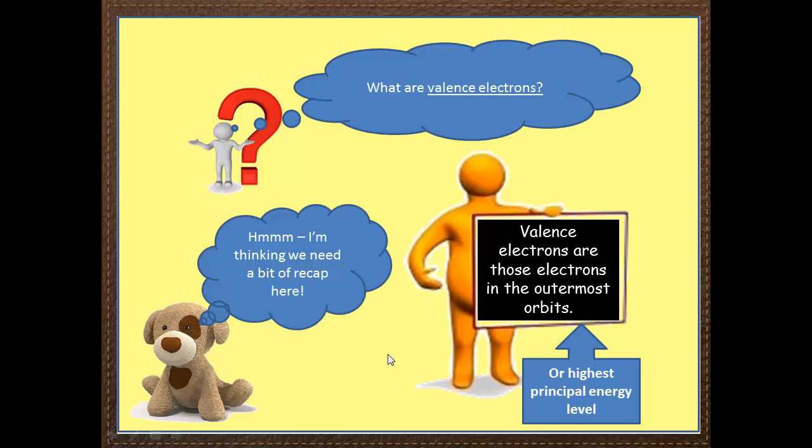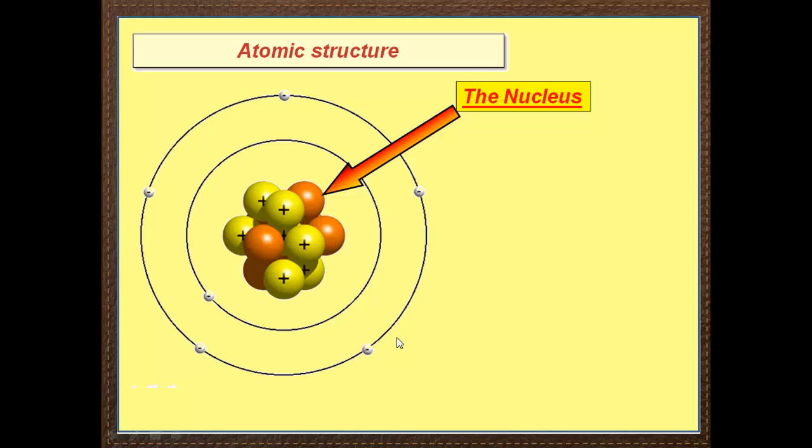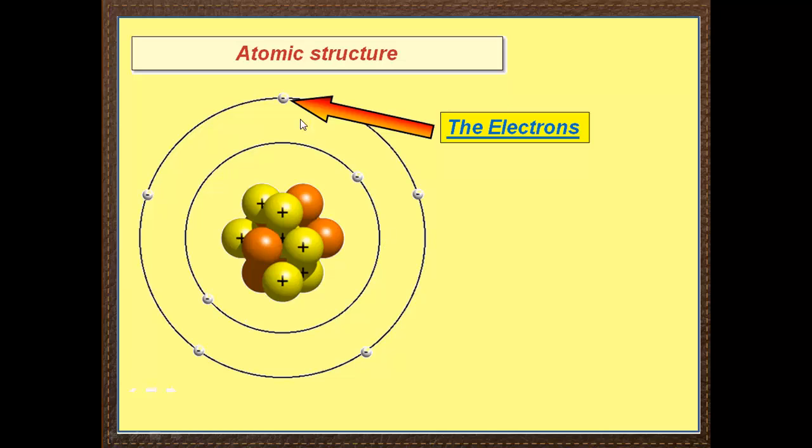Let's go back and think about the basic structure of our atom. Now here's our atom, and as you know, the atom consists of a nucleus. The nucleus has got these positive protons and these neutrons that have no charge. Also, on the outside, we've got electrons.